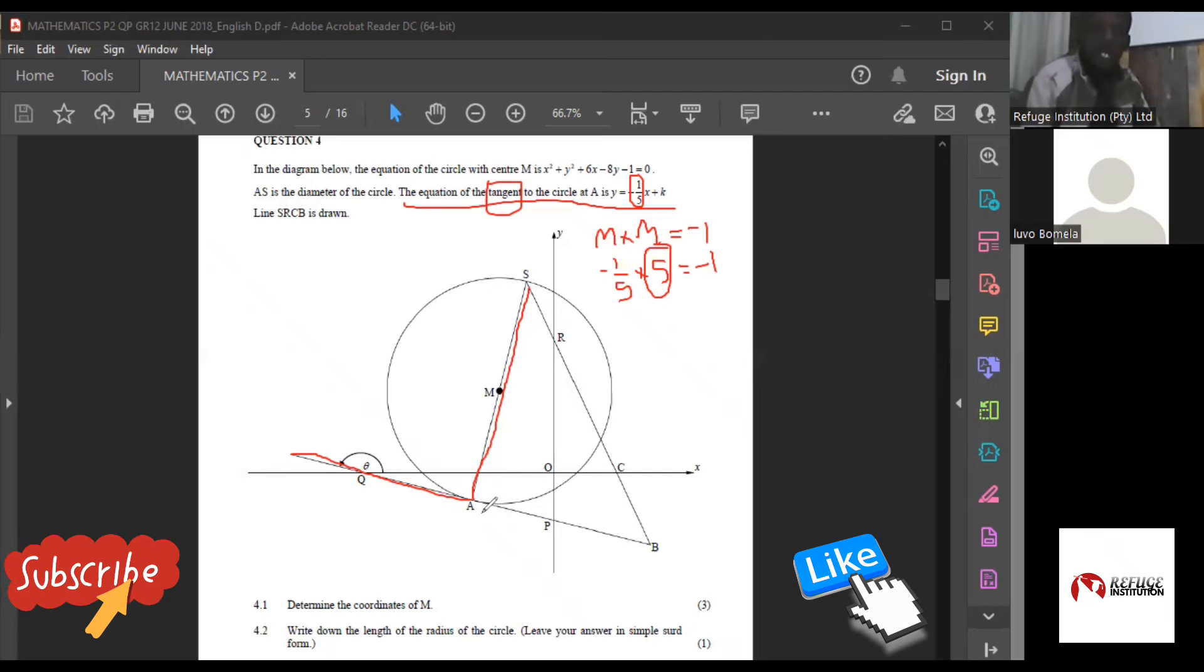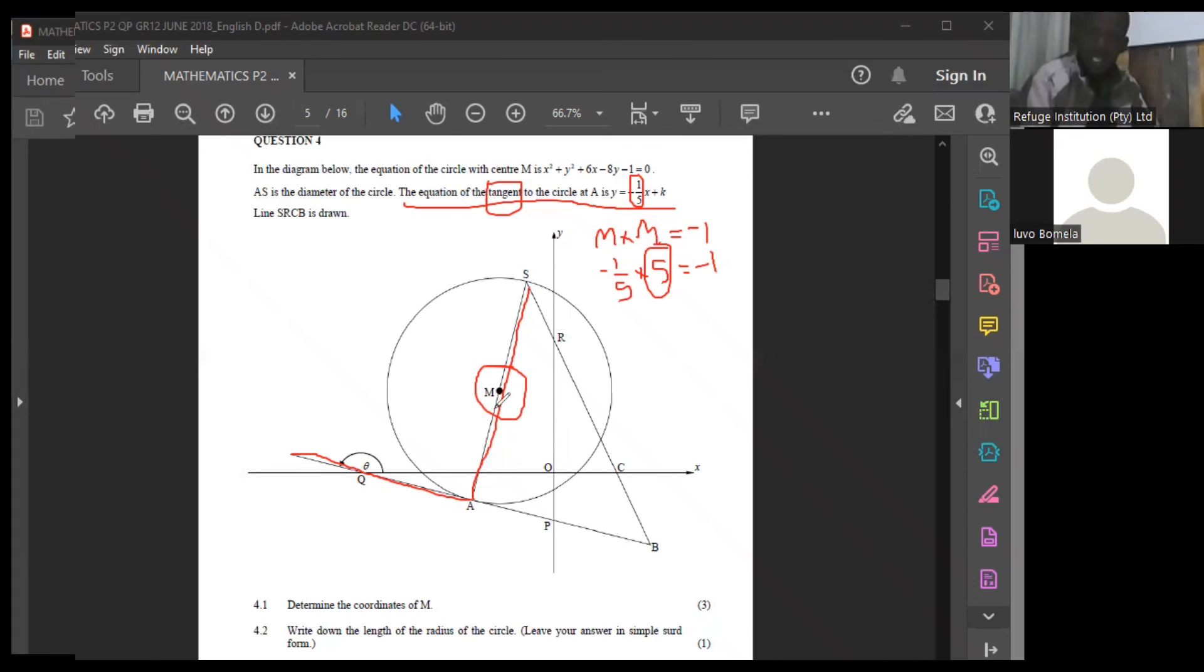Now, what else is there? We found this point, isn't it? What is this point? Point M with coordinates (1, -3). Exactly. So we have a point and we have a gradient.